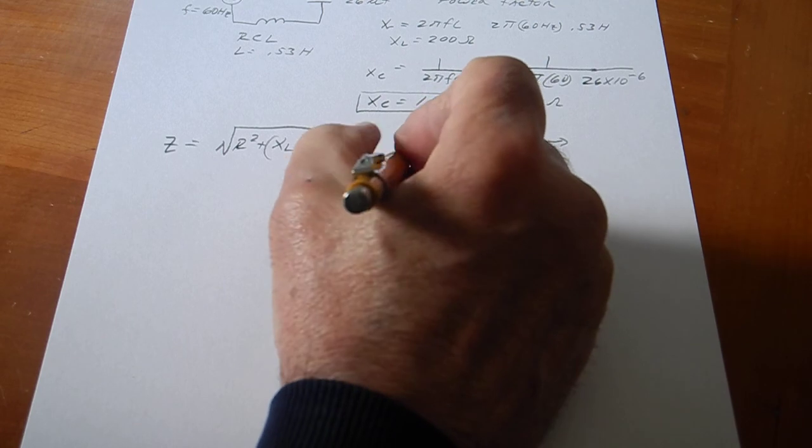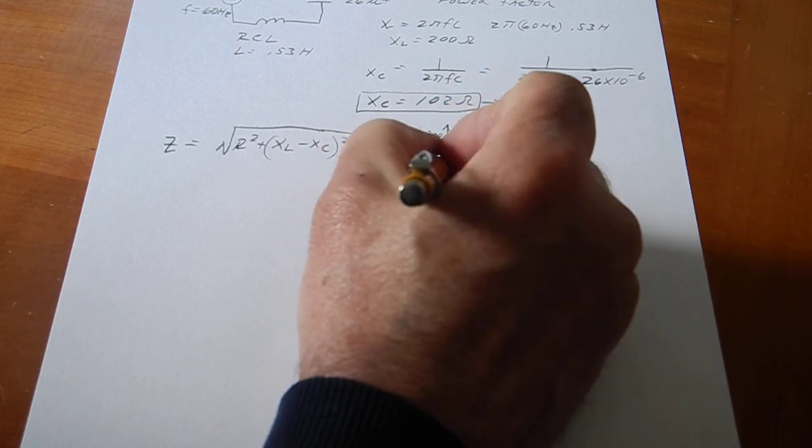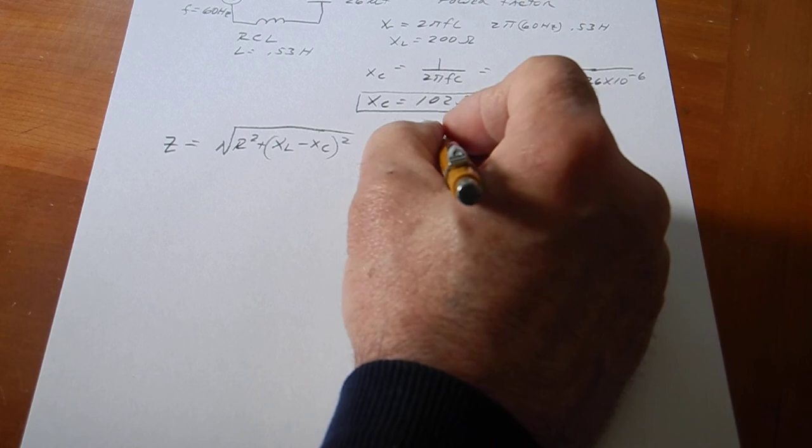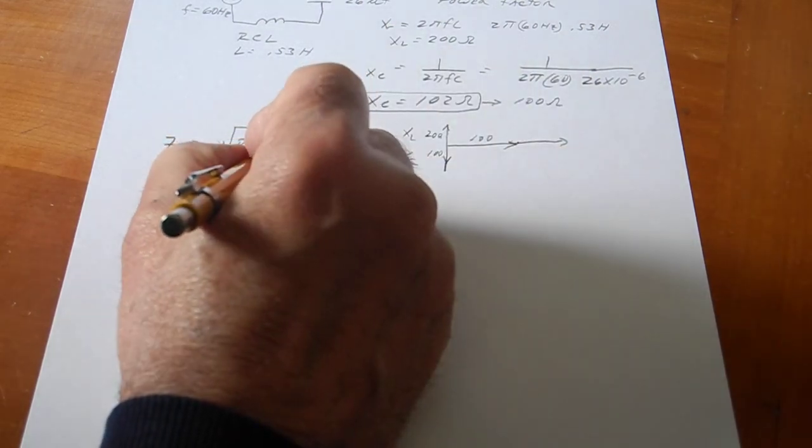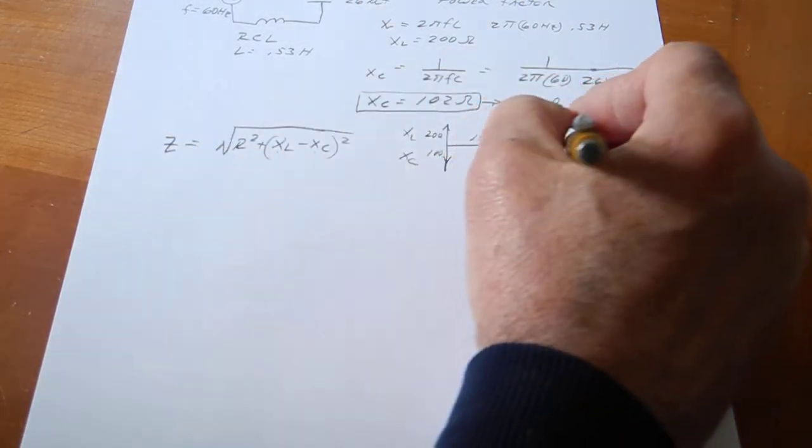So, you can see that X of L and X of C are vectorially opposed from each other and they cancel out. So, 200 minus 100 is 100.